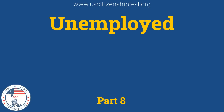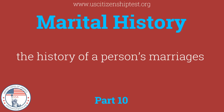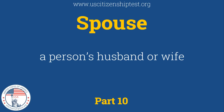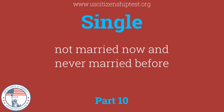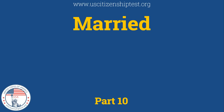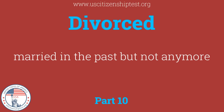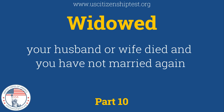Self-employed: You work for yourself. Unemployed: No job. Marital history: The history of a person's marriages. Spouse: A person's husband or wife. Single: Not married now and never married before. Married: Having a husband or wife. Divorced: Married in the past, but not anymore. Widowed: Your husband or wife died and you have not married again.